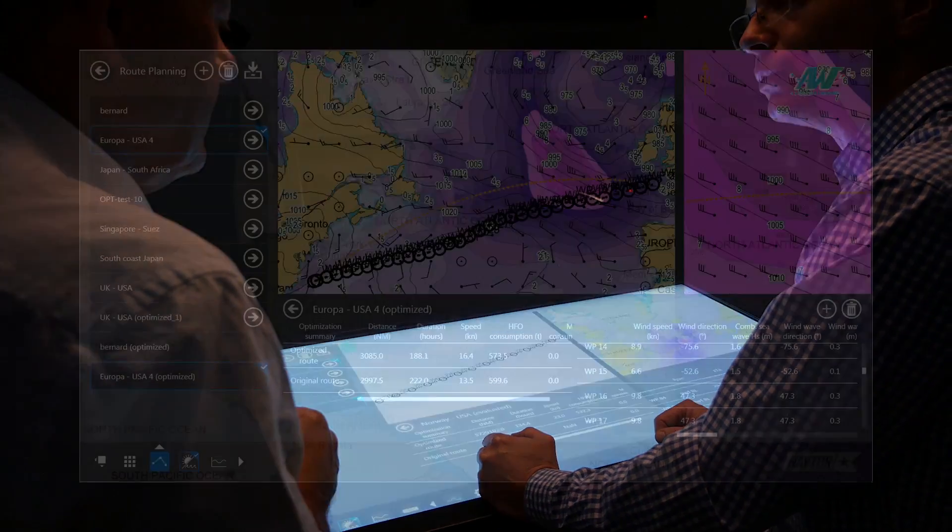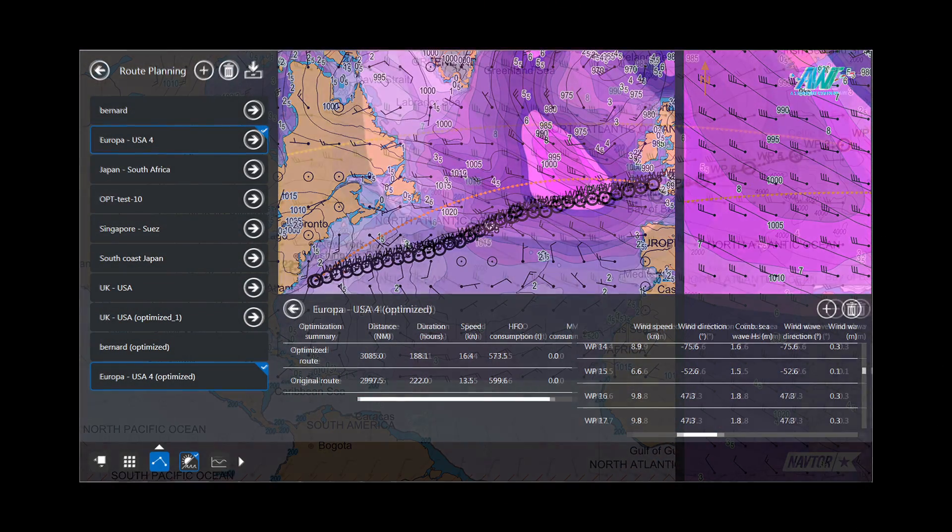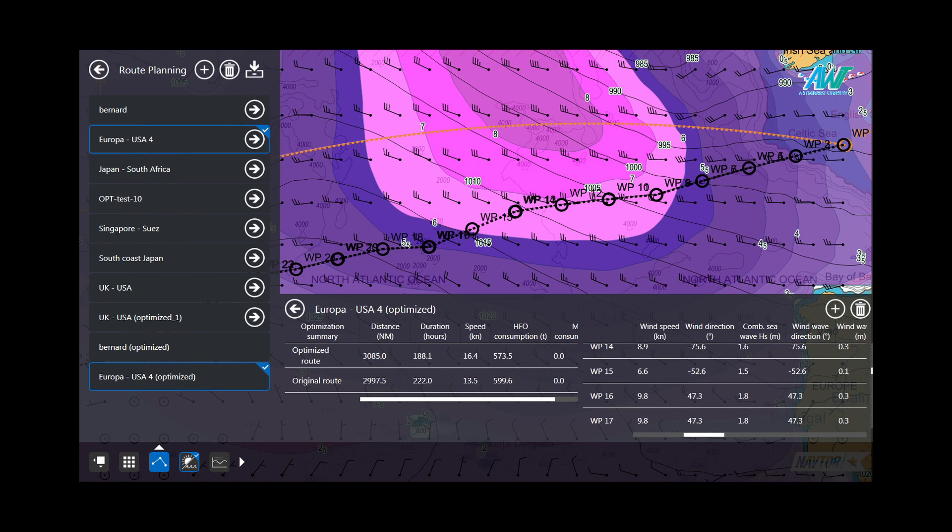On average, an optimization delivers fuel savings of approximately 4%. With the help of NAVSTATION, saving fuel and money is easier than ever before.